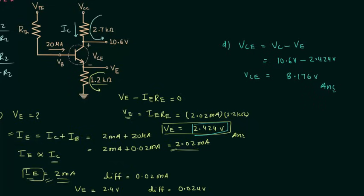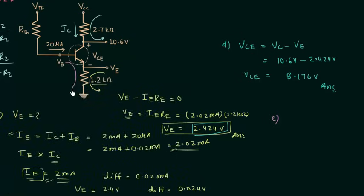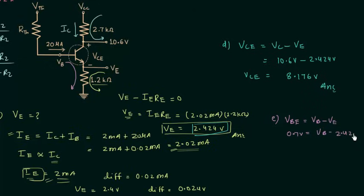Now we will solve Part E to calculate VB, the potential at the base terminal. Applying Kirchhoff's voltage law or using VBE equals VB minus VE: VBE is 0.7 volts and VE is 2.424 volts, so VB equals 3.124 volts.